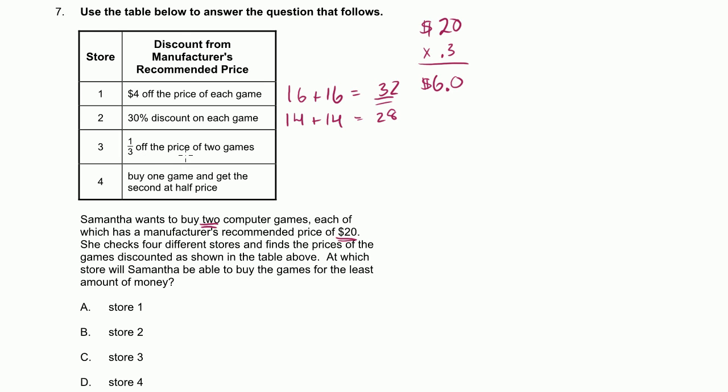Let's switch colors. 1/3 off the price of the two games. Well, you could immediately say that 1/3 is 33%. So that's a bigger discount than this one. You could do the math. You'll figure out, instead of this being $6, it'll be $6.66. And this is going to be $13 and something, something, plus $13 and something, something. And you're going to get something, $27 and some change. But you know that this is a better deal than this one, because this is the same thing as 33% off, which is clearly better than 30% off.